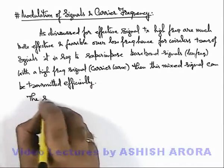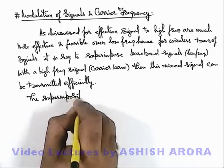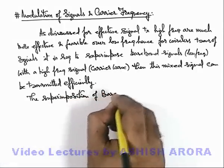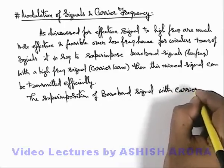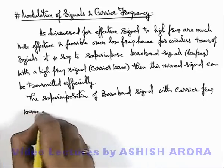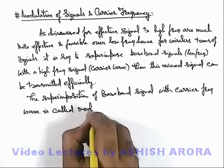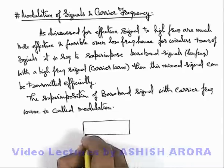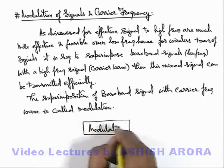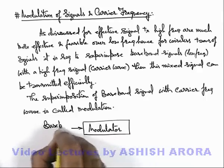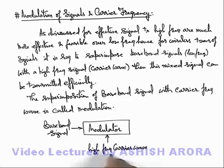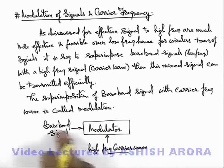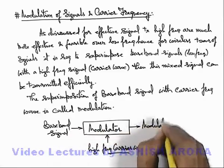The superimposition of the baseband signal with the carrier frequency, that is a high frequency wave, is called modulation. There is a device called a modulator. One input to the modulator is the baseband signal and the other input given to the modulator is the high frequency carrier wave. When the carrier wave frequency is supplied and mixed with the baseband signal, the output is called the modulated signal.